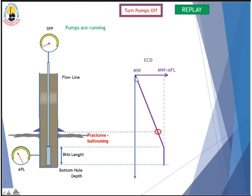ECD increases from the top of the wellbore until the top of the BHA, and it is highest along the BHA. The fractures are usually the issue here — this is the weakest part of the formation, near the shoe. This is where we particularly pay attention, because we usually have losses incurred somewhere near the shoe.